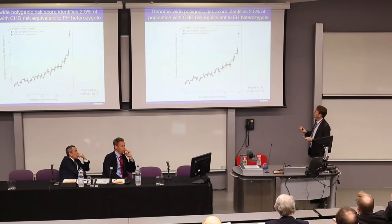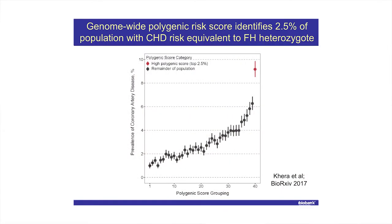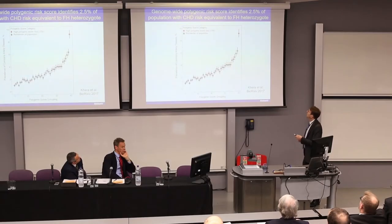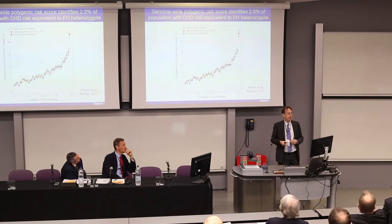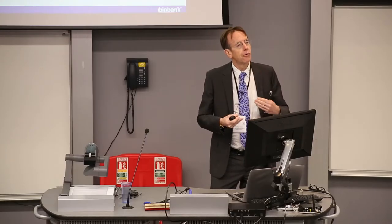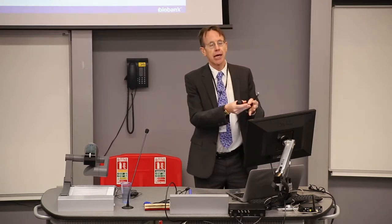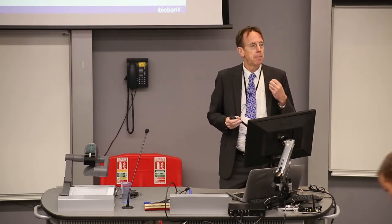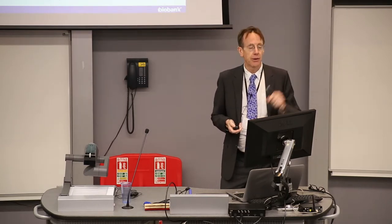One result from UK Biobank is from Sekar Kathiresan at the Broad Institute, showing the polygenic score for coronary heart disease risk and making the point that you can identify, using this polygenic score, quite a substantial proportion of the population whose risk is equivalent to being an FH heterozygote. These genetic scores are already showing their value in a general population — identifying people who on the basis of other known risk factors would not appear to be high risk, but on the basis of their genetic risk factors they are, and where they could get targeted treatment.